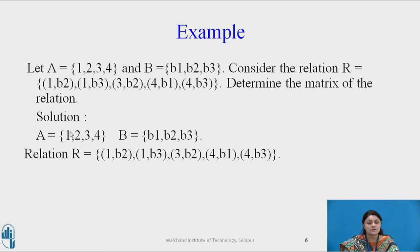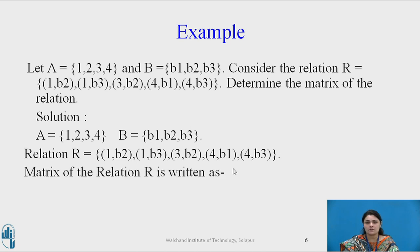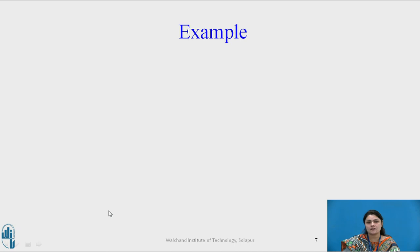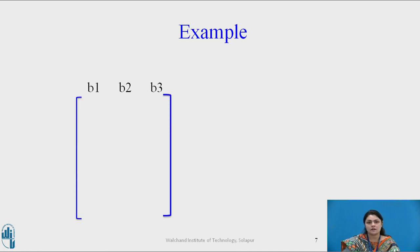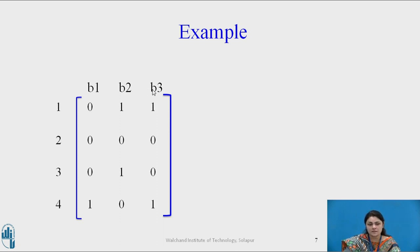In the solution: set A has elements 1, 2, 3, 4 and set B has elements B1, B2, B3. The relation R is (1, B2), (1, B3), (3, B3), and so on. The matrix of relation R is represented in an M by N format where rows correspond to set A — elements 1, 2, 3, 4 — and columns correspond to set B — B1, B2, B3. This is how we represent it in matrix format.